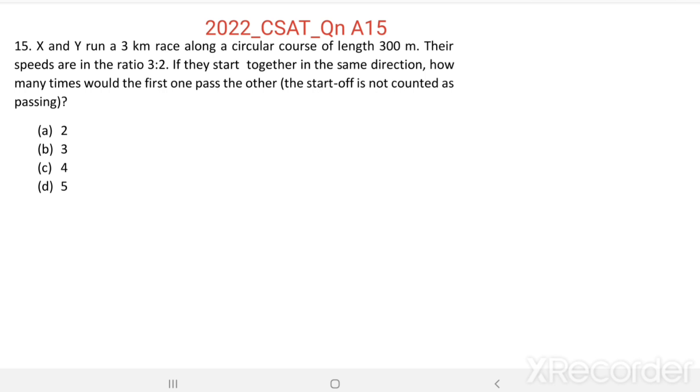X and Y run a 3 km race along a circular course of length 300 m. Suppose this is the circular track. It is 300 m long. The entire race is for 3 km. 3 km is equal to 3 times 1000, which is 3000 m.